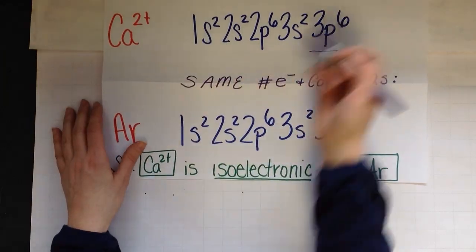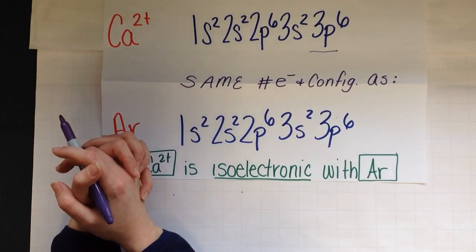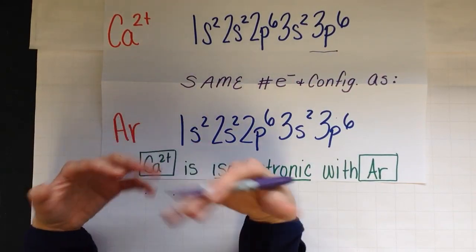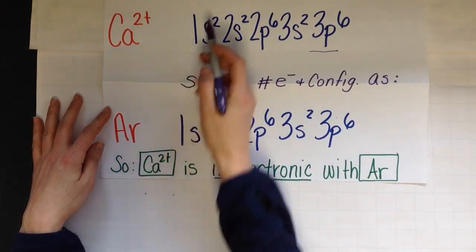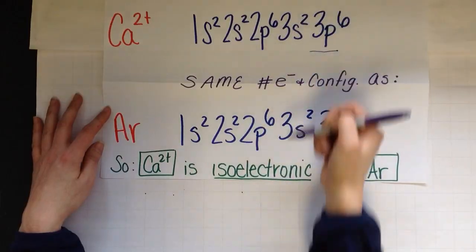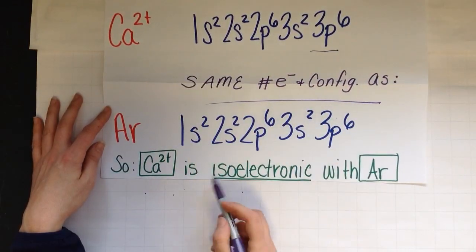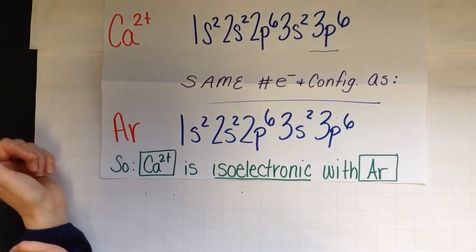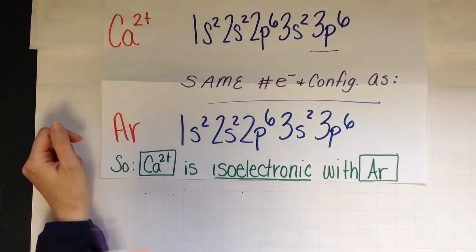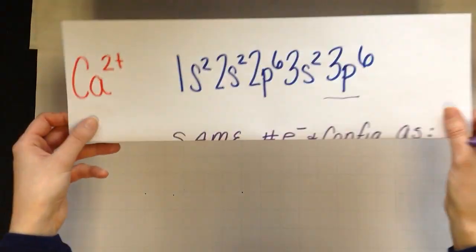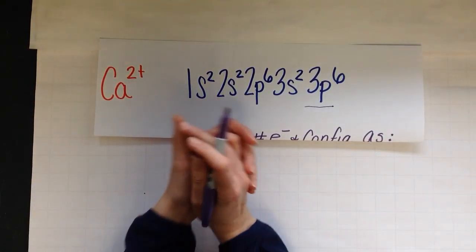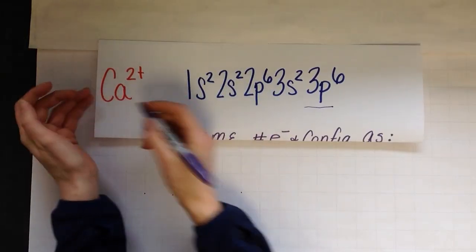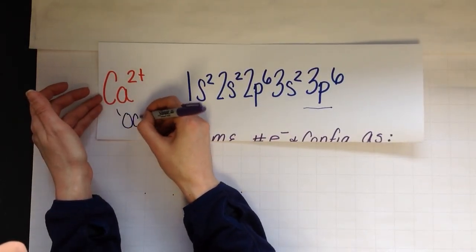Remember, the whole point why you gain and lose electrons is you are trying to be like a noble gas. So argon's electron configuration is exactly the same. This is called being isoelectronic. Calcium ion is isoelectronic with argon. So if we go back to our cation, the reason why these elements turn into ions is they're trying to achieve an octet.